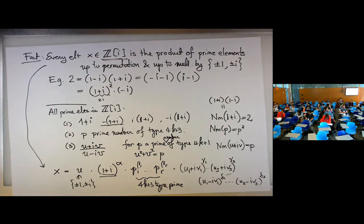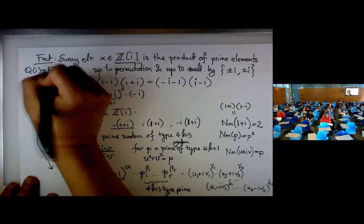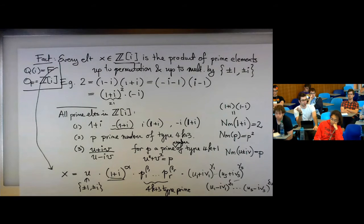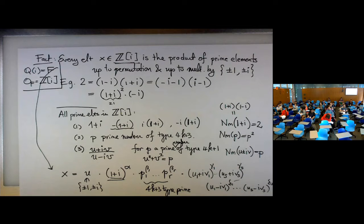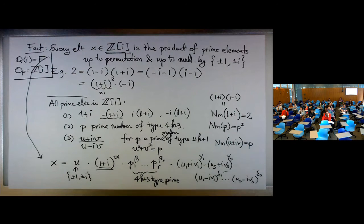A student asks: do we know which fields have the Gaussian integers as their ring of integers? The answer is F = Q adjoin i, and O_F = Z[i]. More generally, if we start with a ring like Z adjoin an algebraic number, the logic goes from number field down to the ring of integers. Adjoining that element to Q gives the field, but that ring may not be the full ring of integers of that field.